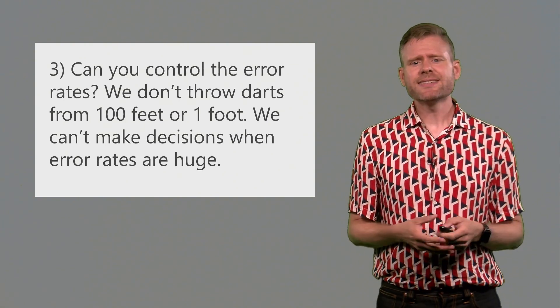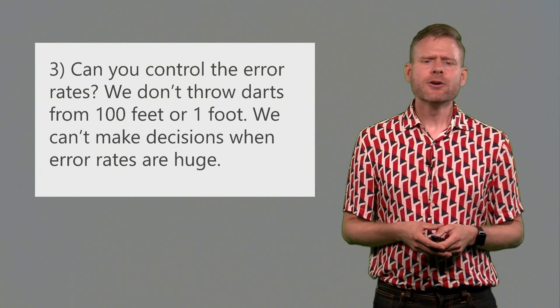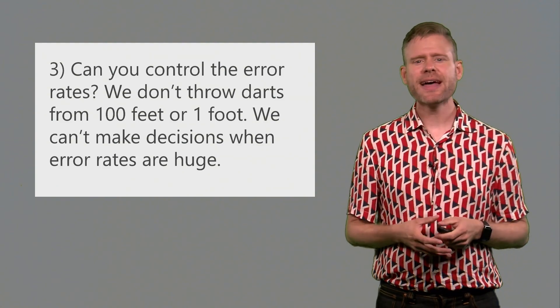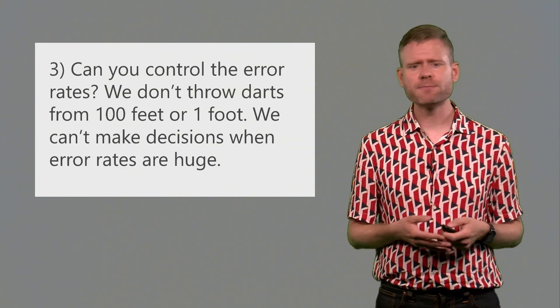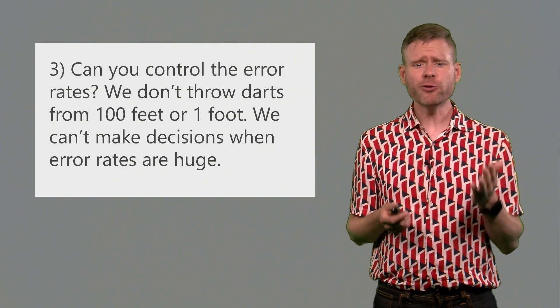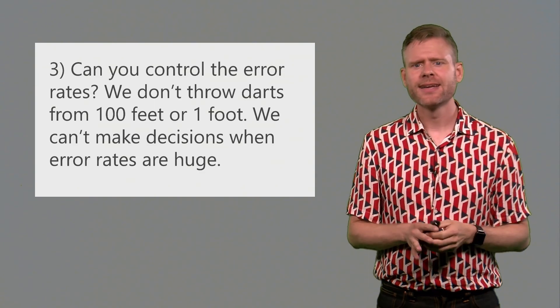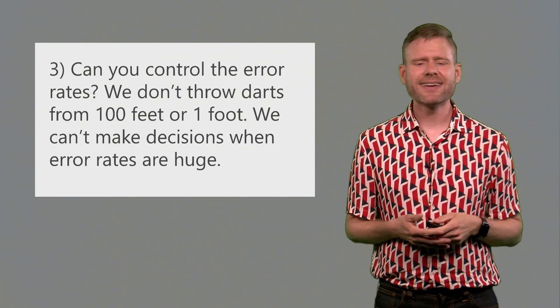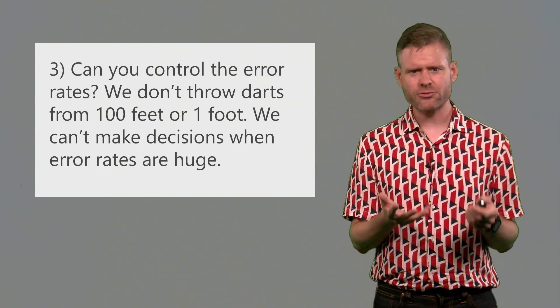Finally, the last thing to take into account is whether you can actually control the error rate in the study that you are designing. We have carefully constructed a game of darts so that the error rates are actually nicely balanced. We don't throw darts from maybe 100 feet away from the board, because in those cases even the best players would very likely miss the board altogether. We also don't throw a dart from one foot away from the dart board, because then we could just stick it in and we would never make any errors. We can't make decisions when error rates are huge, when our error rates are so high that we're looking at a chaotic pattern. So you want to be able to control the error rate in some sensible way so that you're not wrong too often.